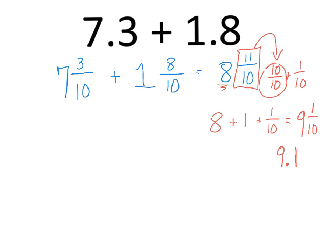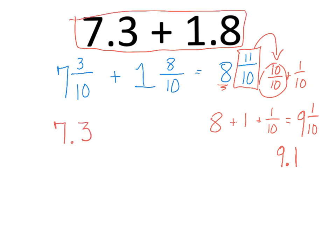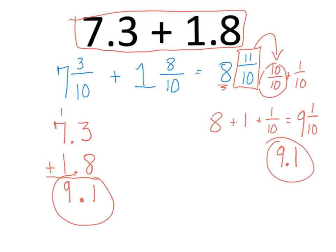But we also could just take these and add it up. Make sure your decimals are lined up. And then we can add them: 11, 8, 9 — bring down your decimal — 9 and 1 tenth. Two different ways of solving this problem.